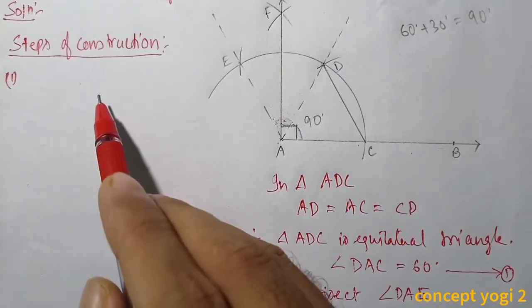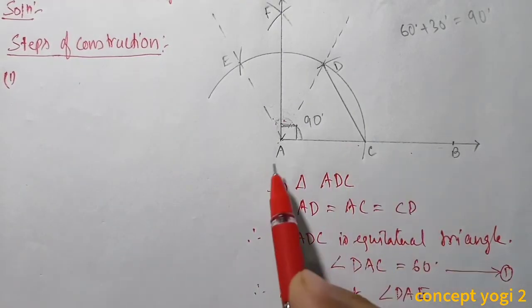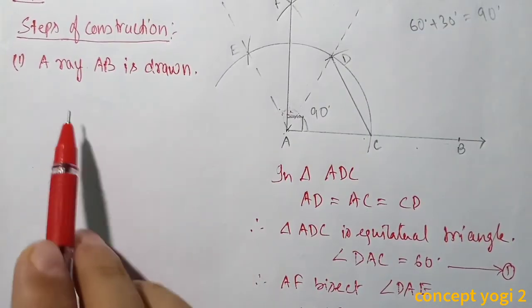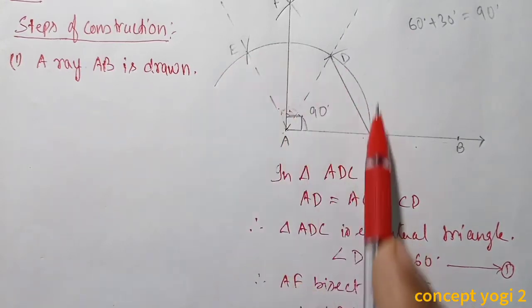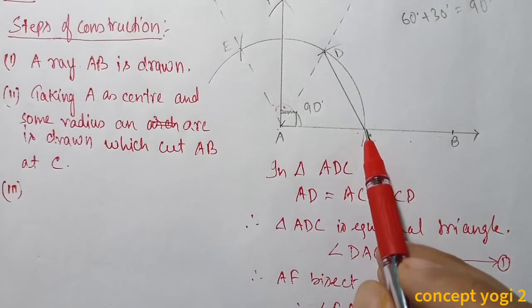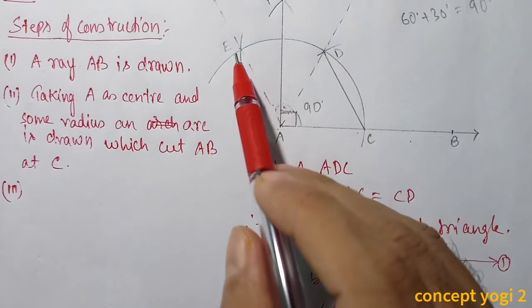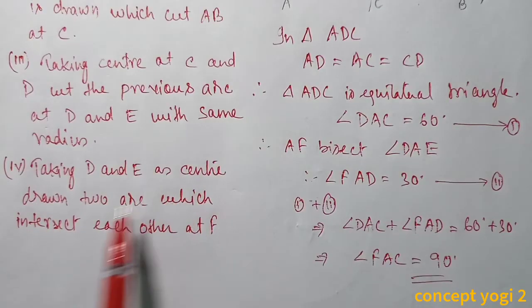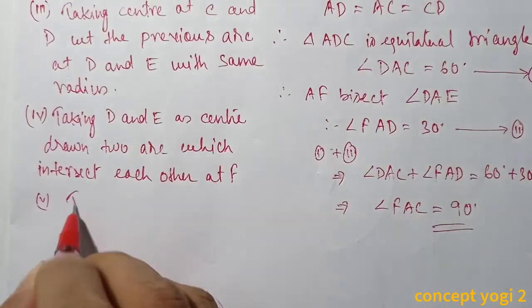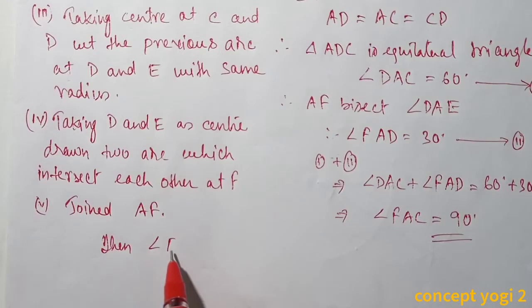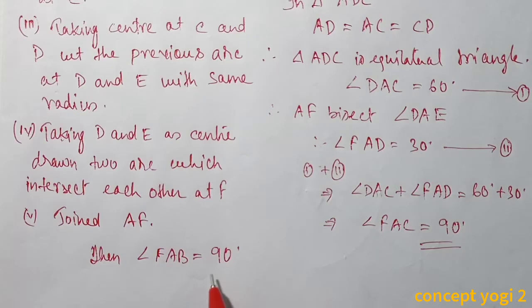Now we will note down the steps of construction. Step 1: A ray AB is drawn. Step 2: Taking A as center and some radius, an arc is drawn which cuts AB at C. Step 3: Taking compass at C with the same radius, cut the previous arc at D and E. Step 4: Taking D and E as centers with radius more than half, draw two arcs which intersect each other at F. Step 5: Join AF. Then angle FAB equals 90 degrees.